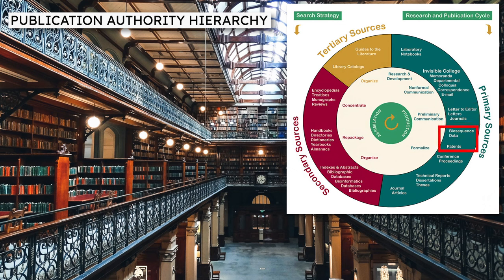The next step is the formalisation of the researchers' work. On our image, this occupies the area from the 4 o'clock position to the 6 o'clock position. Formalisation takes place through various processes of increasing rigour and professional scrutiny, and it's at this point you can start citing research with more confidence, though still with caution, for reasons I'll explain.